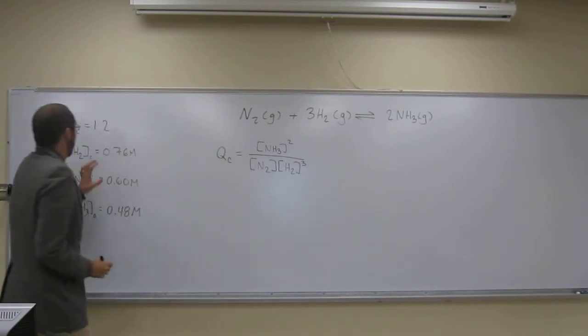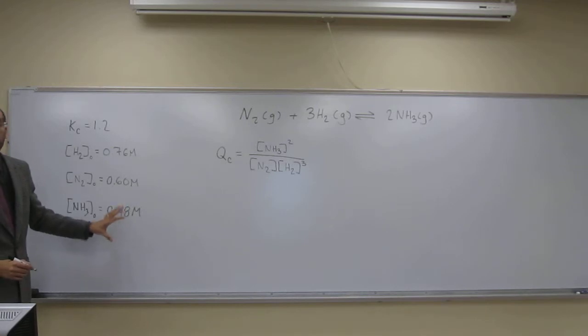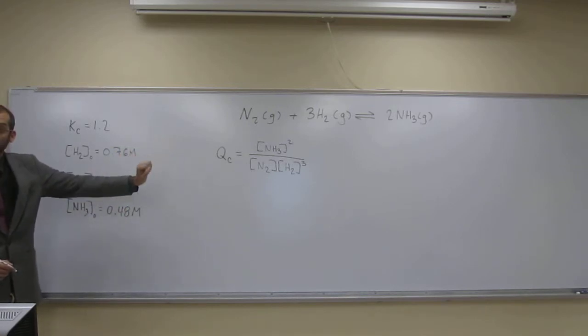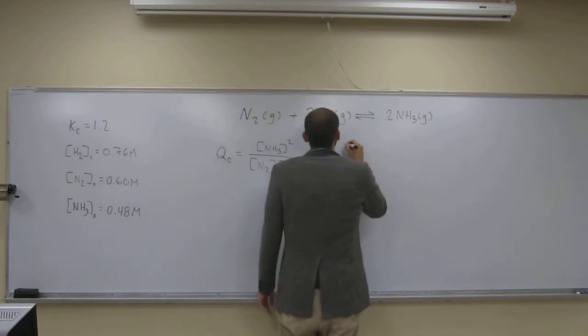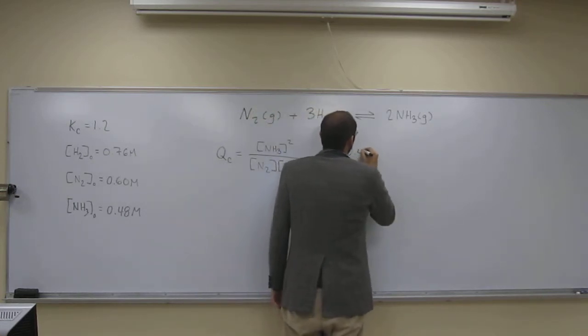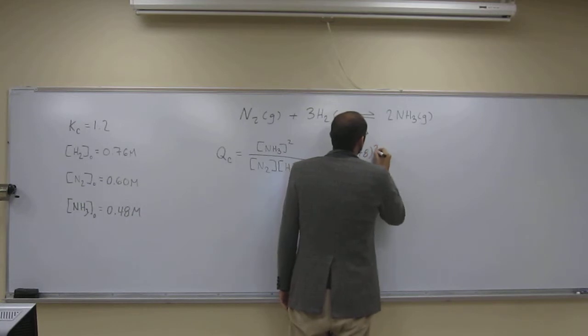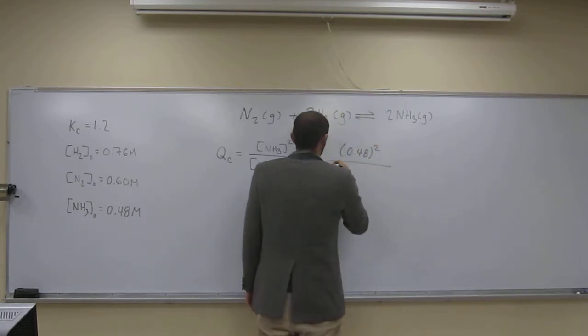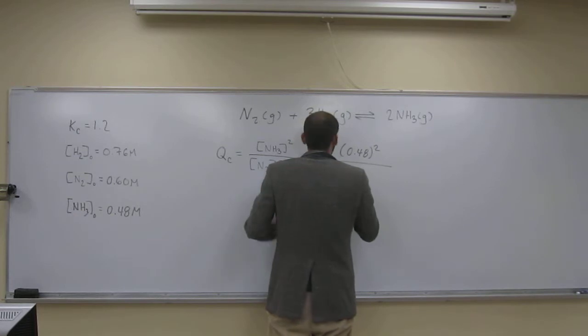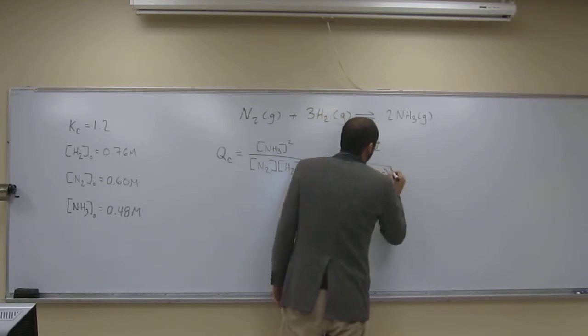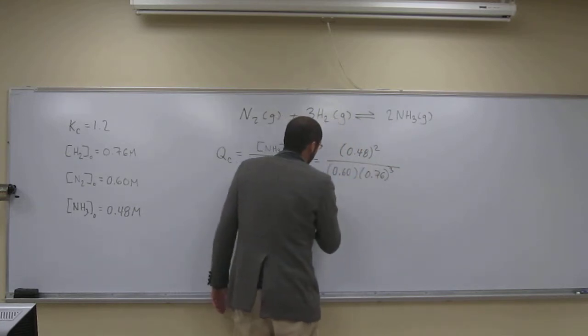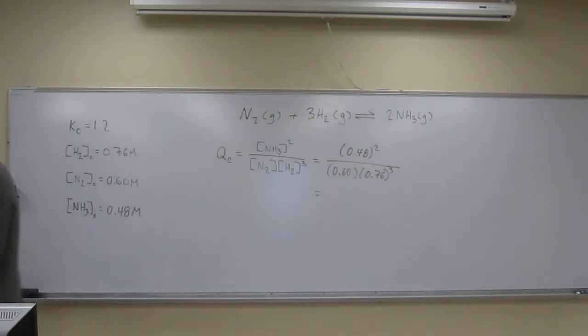It gives us these initial concentrations, so what we want to do is just plug those in directly. So 0.48 squared divided by nitrogen, 0.60, and hydrogen, 0.76 cubed. Let's figure out what that is equal to.